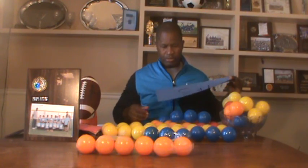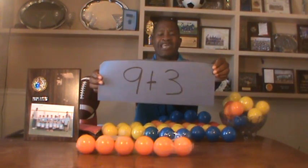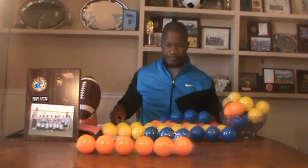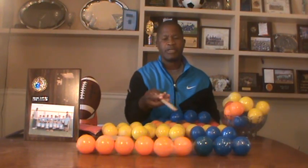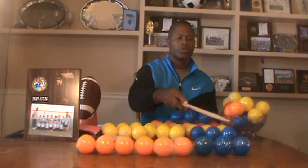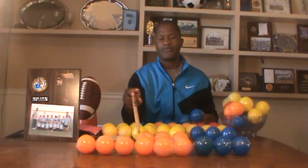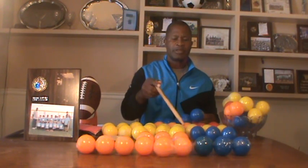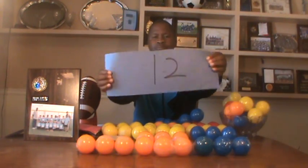The next one is going to look a little larger: nine plus three. Three groups of threes is the same as nine — one, two, three, four, five, six, seven, eight, nine — plus three more. The answer: one, two, three, four, five, six, seven, eight, nine, ten, eleven, twelve. Nine plus three equals twelve.